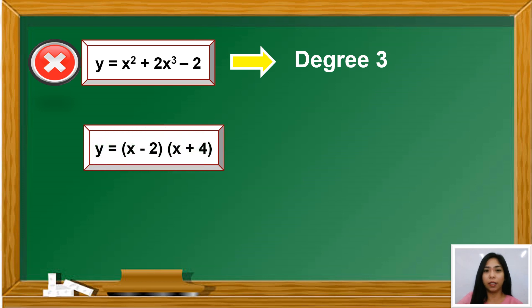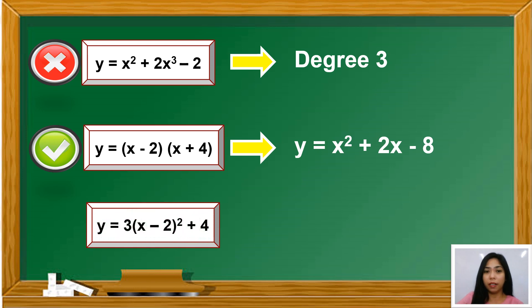Y equals X squared minus 2 times X plus 4. It is a quadratic function. Why? When you multiply the two binomials or applying the FOIL method, you will get Y equals X squared plus 2X minus 8. And Y equals 3 times the square of X minus 2 plus 4 is also a quadratic function. Why? When you simplify the equation, you will have Y equals 3X squared minus 12X plus 16.